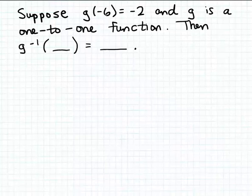So since we're told here that g of minus six is equal to minus two, that tells us that when the input to the function g is minus six, the matching output is minus two.